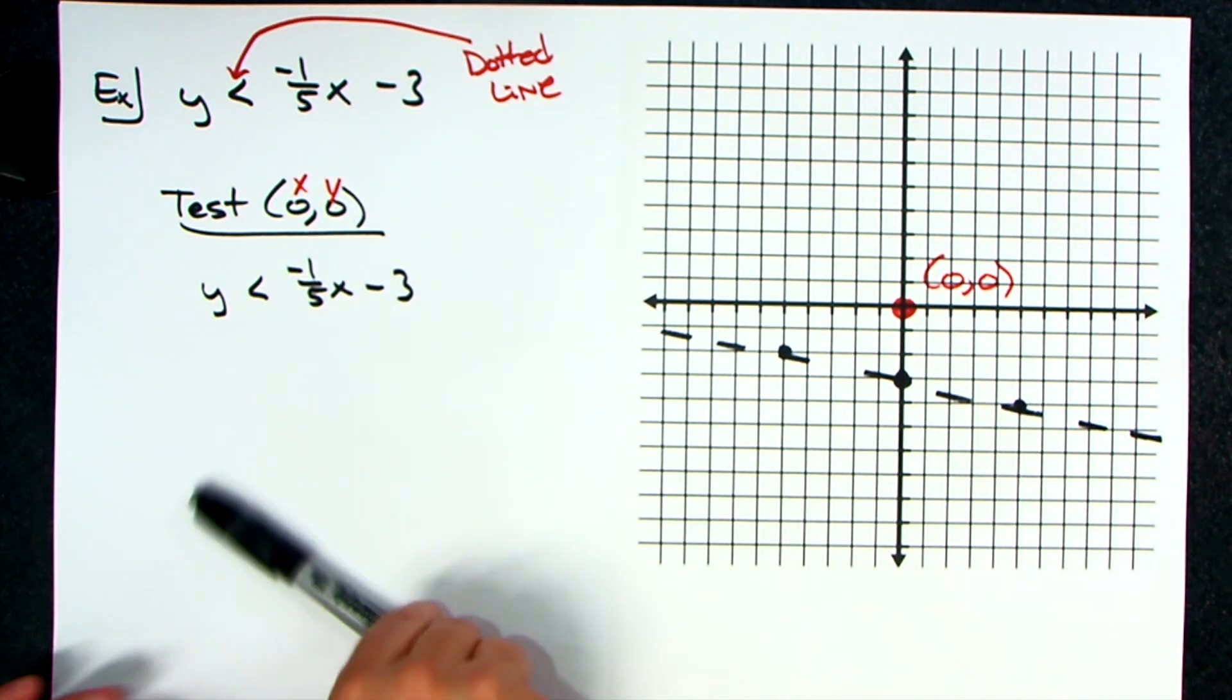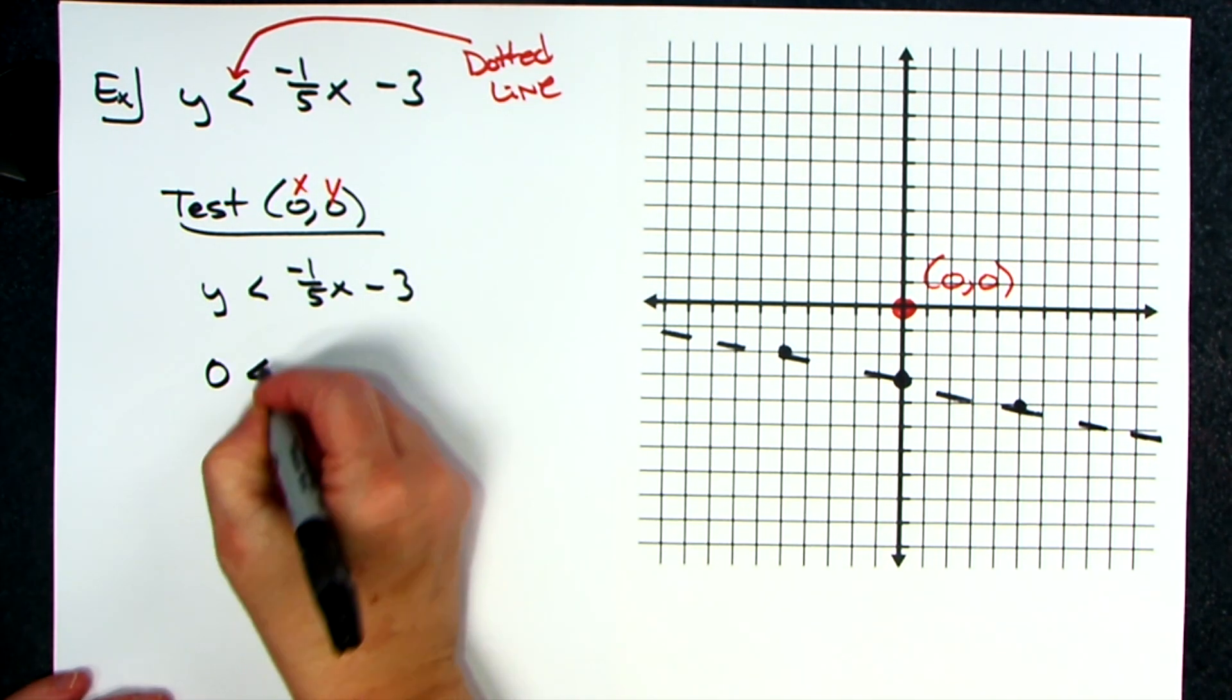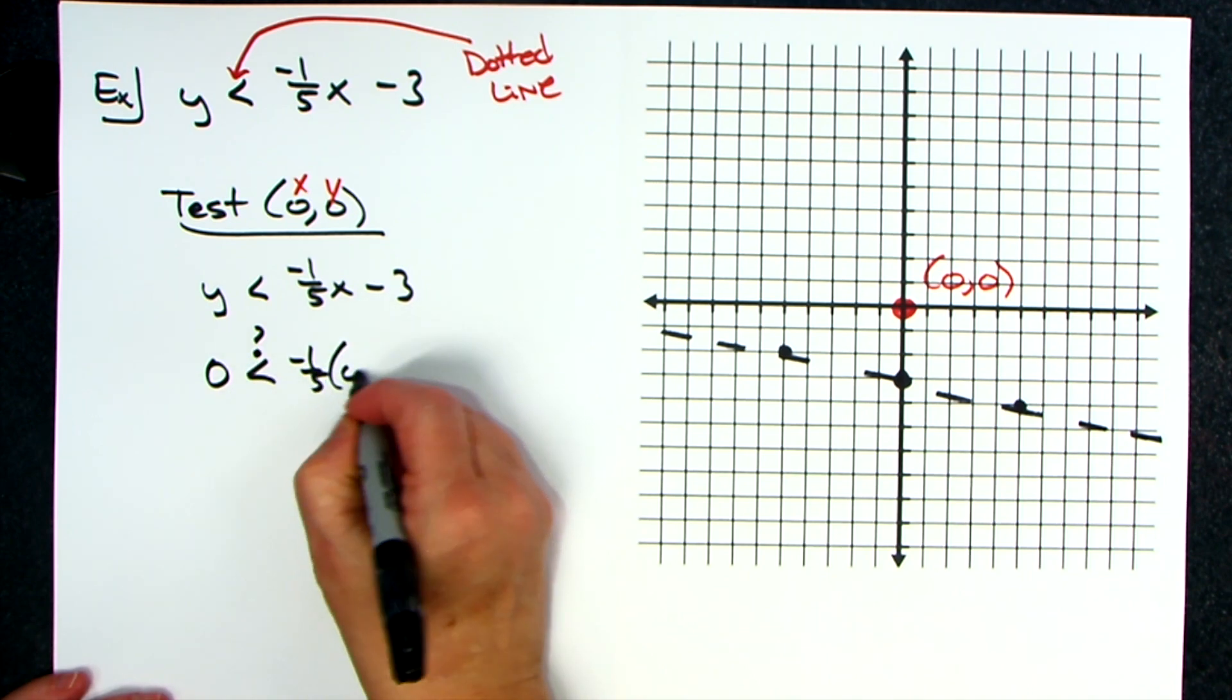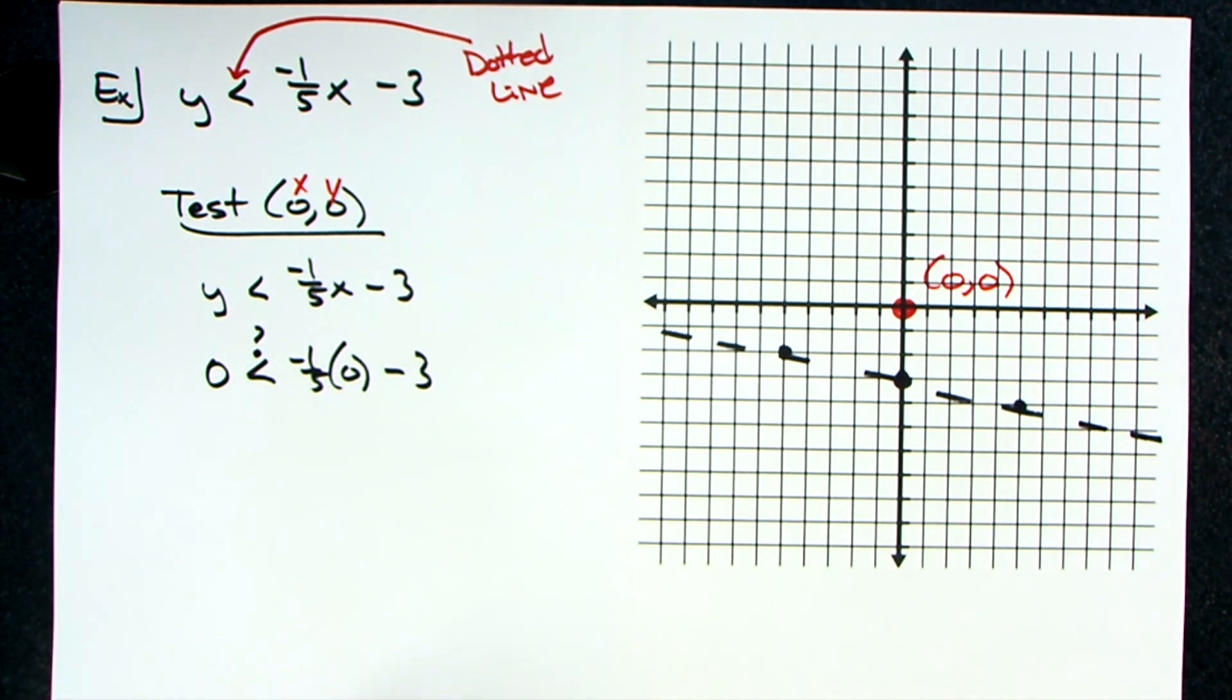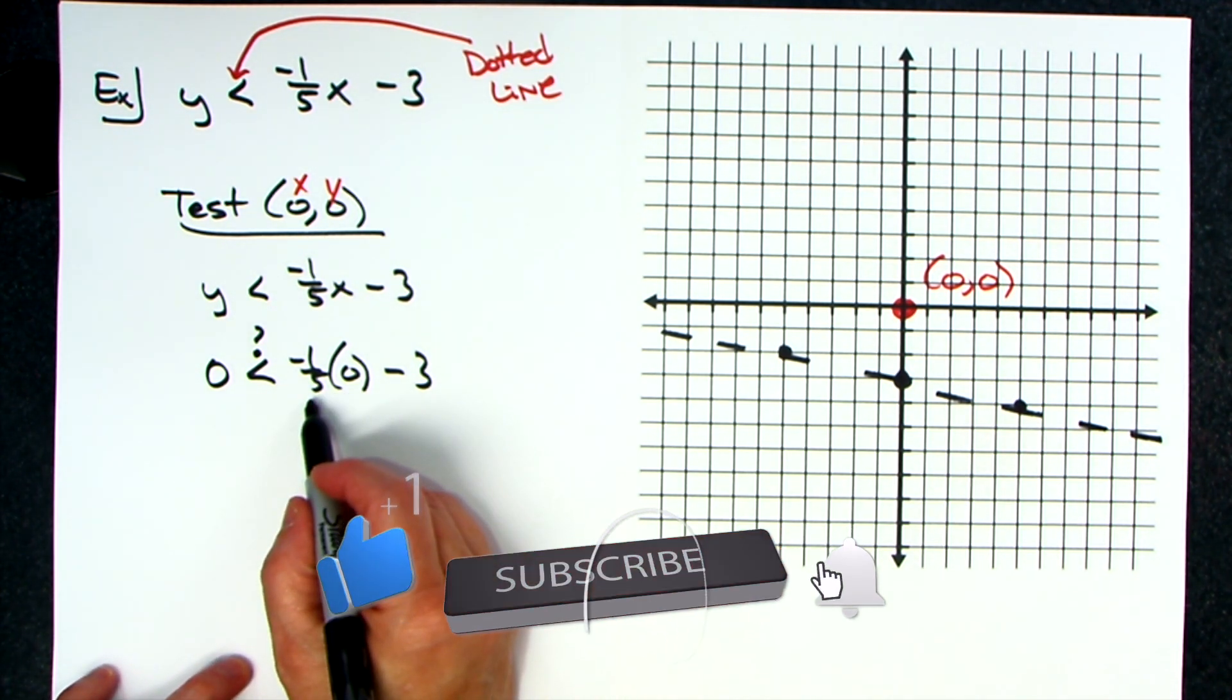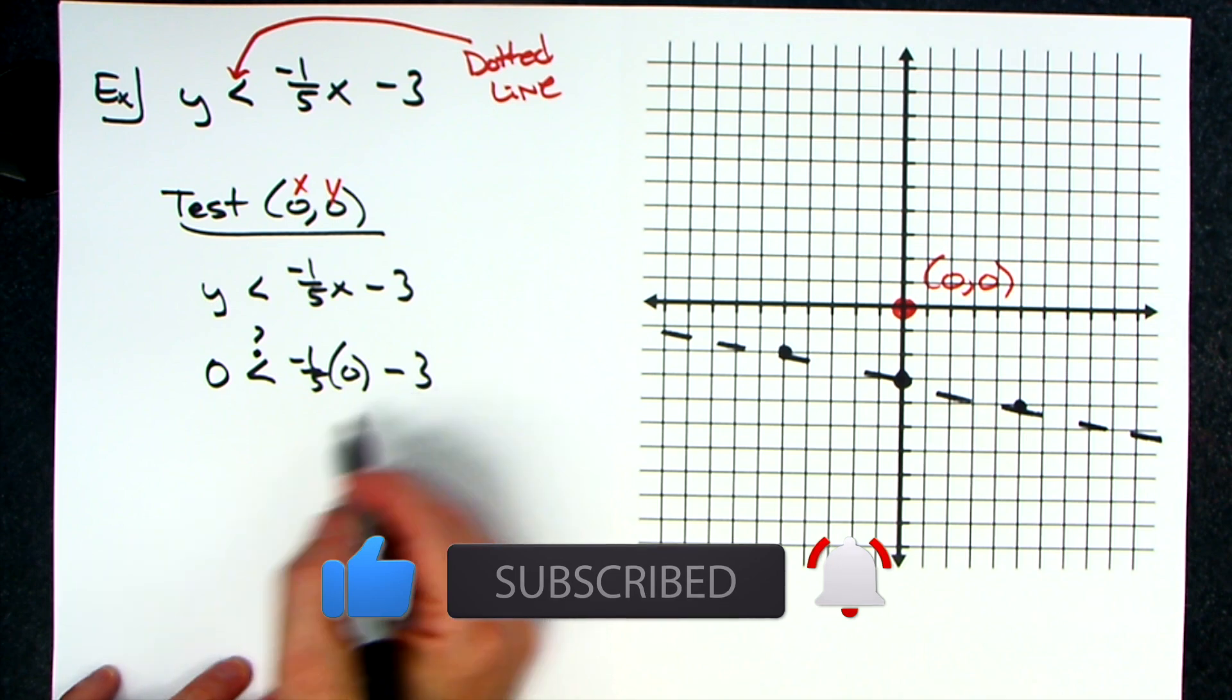So then zero less than, question mark, negative one-fifth times zero minus three. Okay, so doing the math over here: zero times negative one-fifth is going to give me zero minus three - I'll have a negative three on that side.